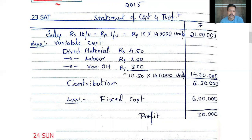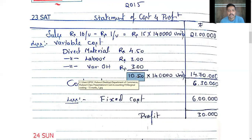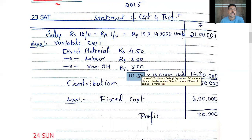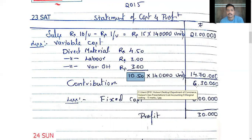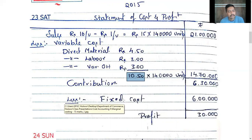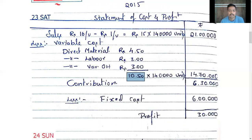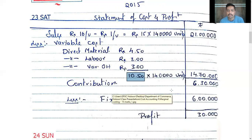We prepare a statement of cost and profit. Sales minus variable cost equals contribution; contribution minus fixed cost equals profit. Sales: Rs. 21,00,000. Variable cost per unit is 10.50, total variable cost for 1,40,000 units is Rs. 14,70,000. Contribution is Rs. 6,30,000. Fixed overhead is Rs. 6,00,000. Net profit is Rs. 30,000.